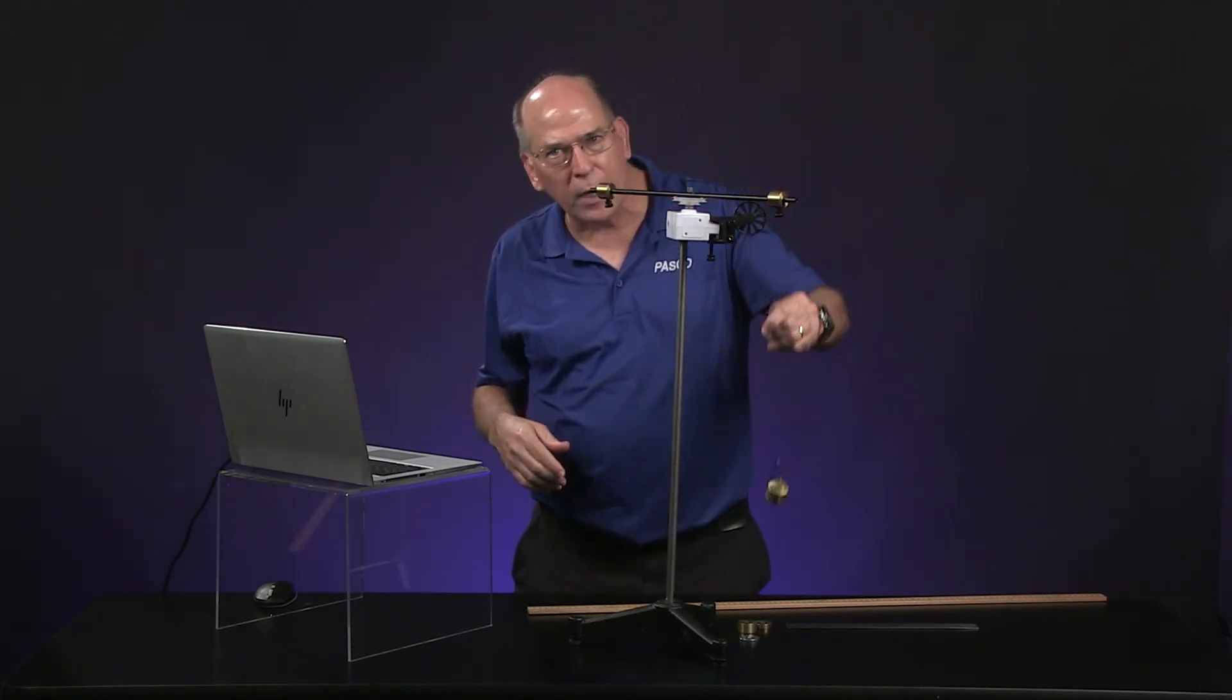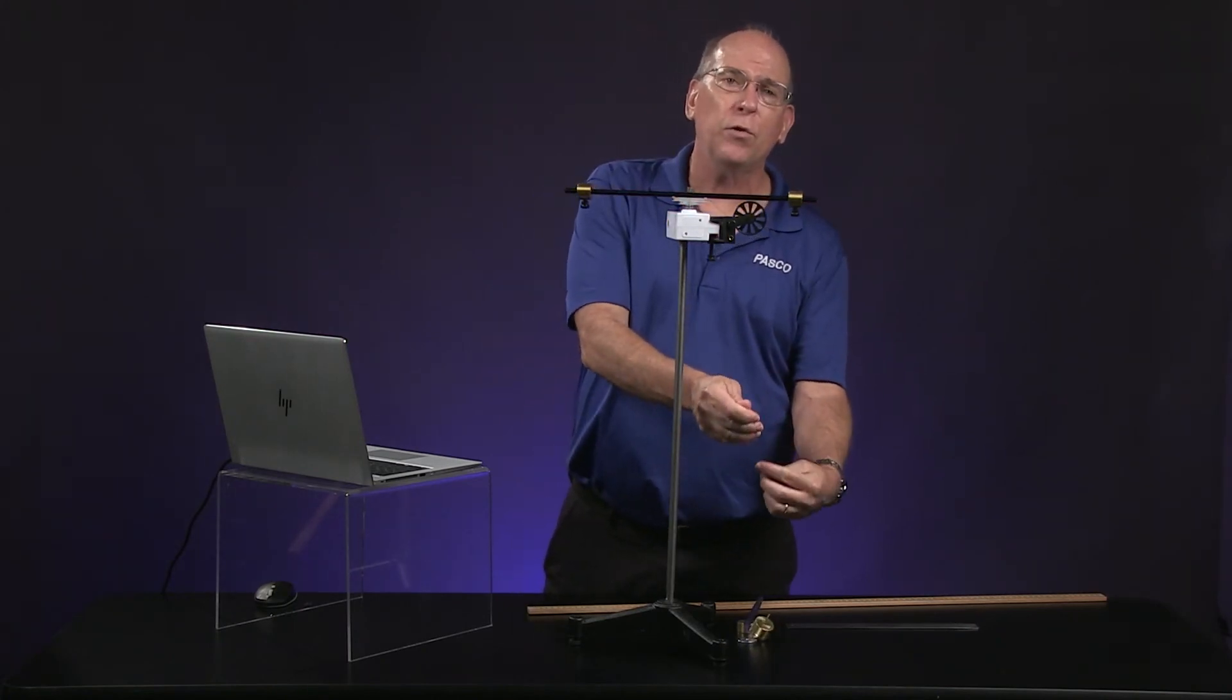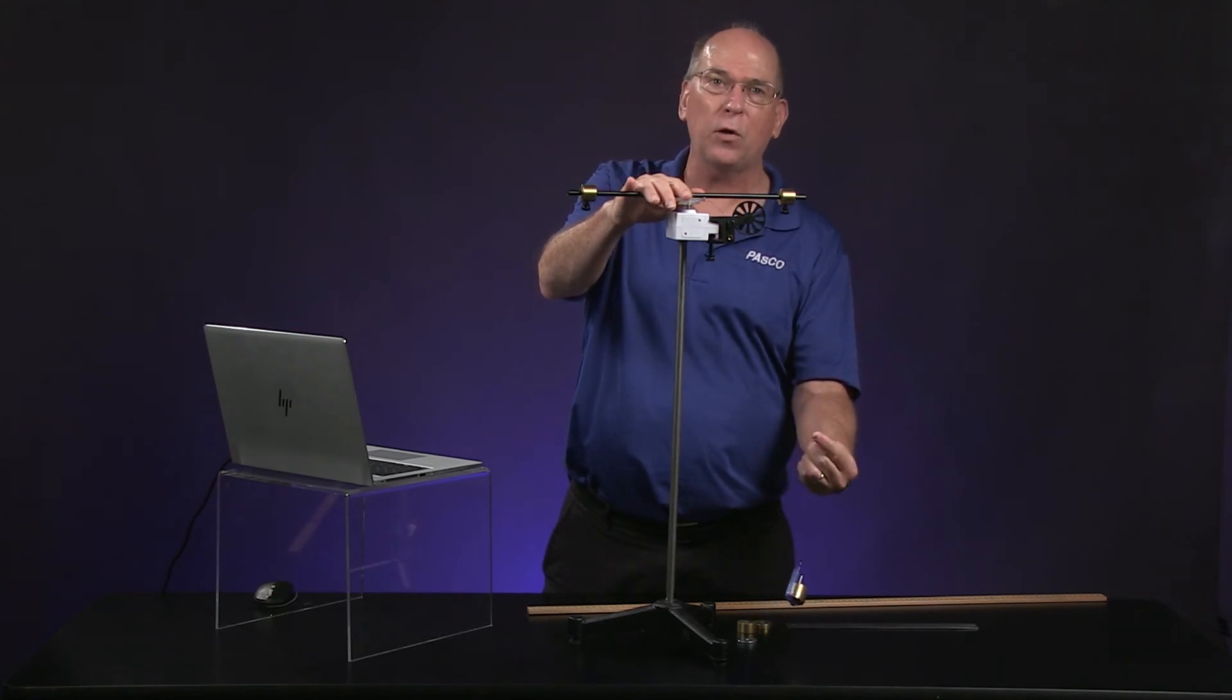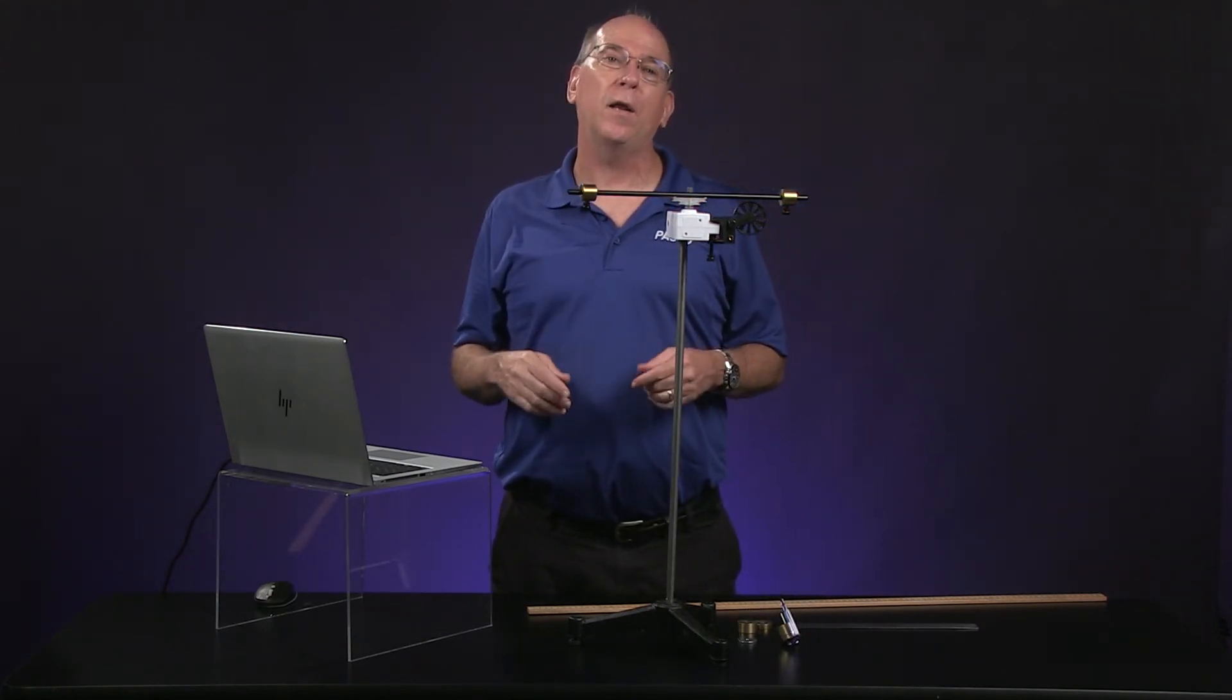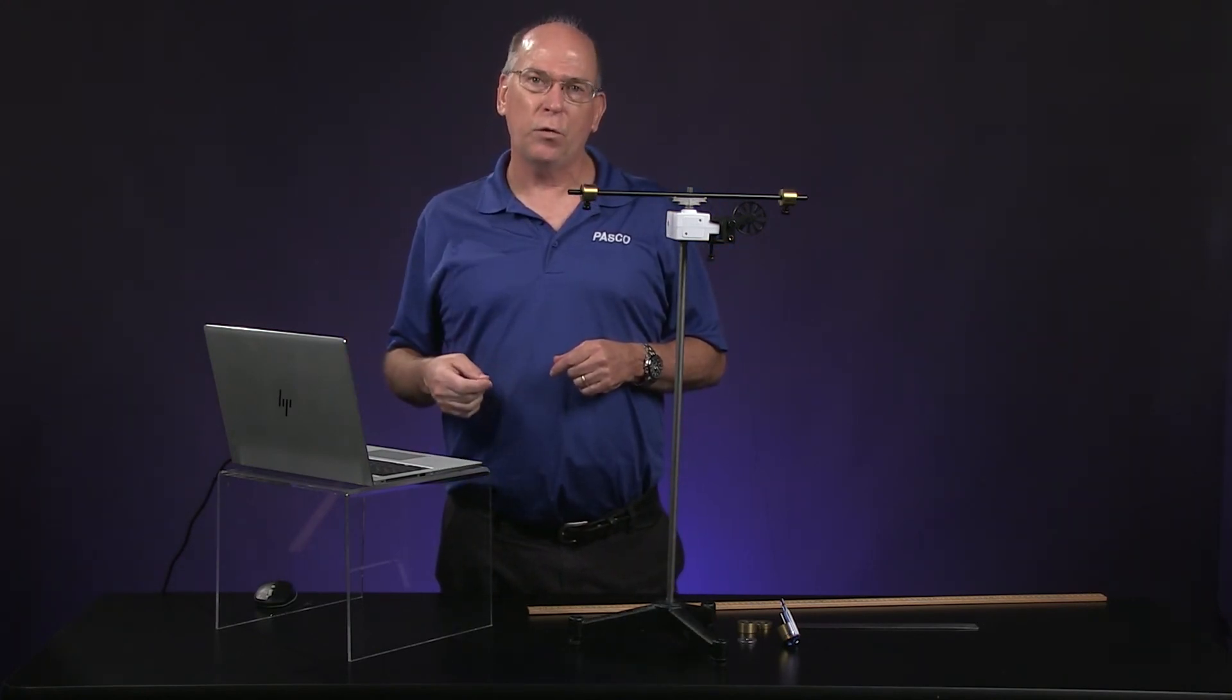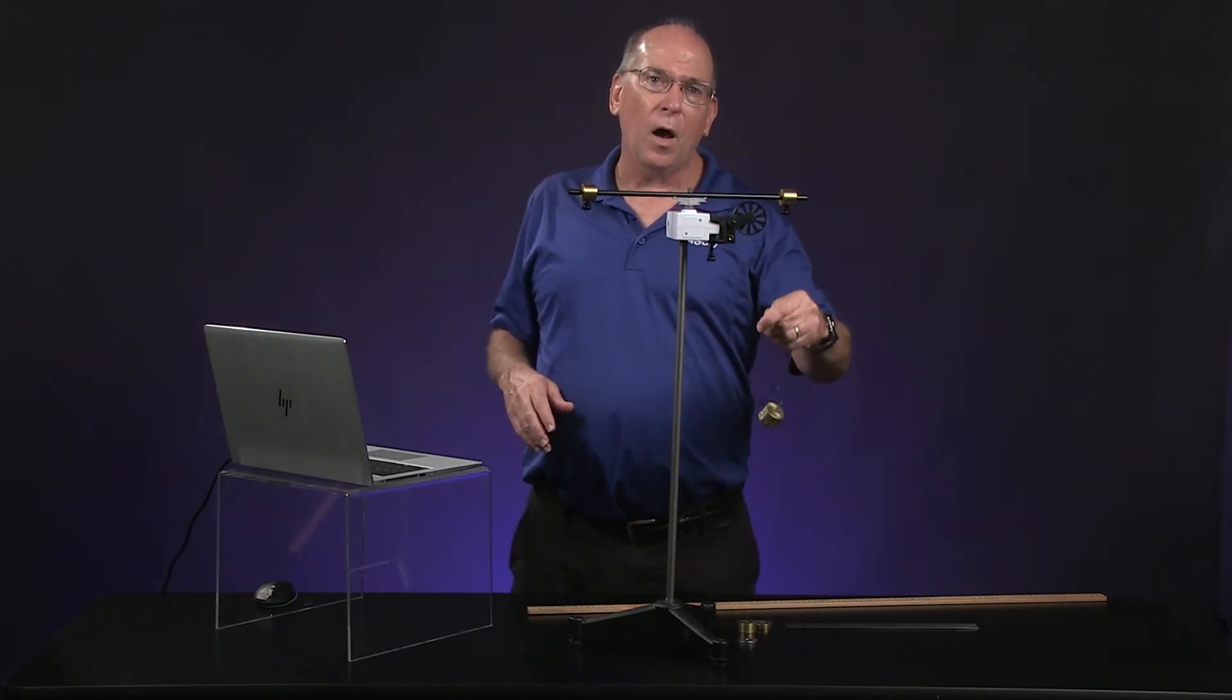The hanging mass is accelerating downward, so the tension must be less than the weight. There's kind of a tug of war going on and the weight is winning. It's got to be greater than the tension. The equation for the force of tension is provided in question one, but a dedicated physics student would use a free body diagram of the hanging mass to derive this equation.